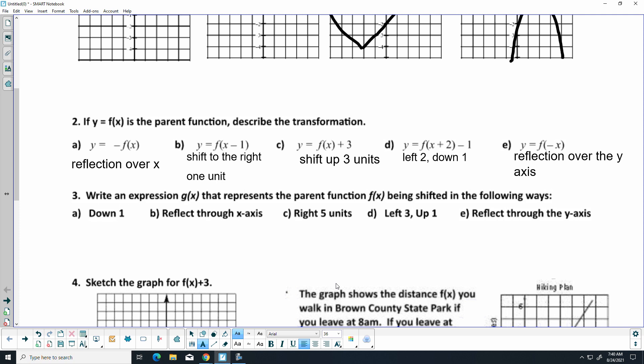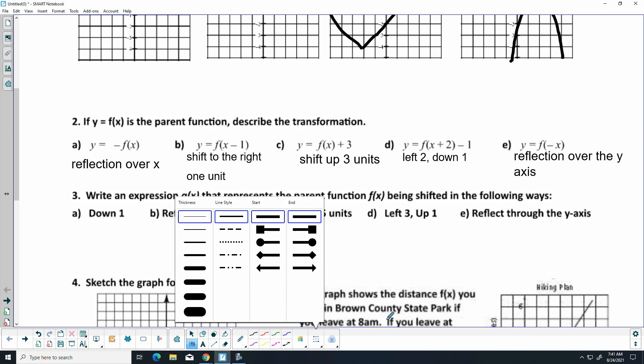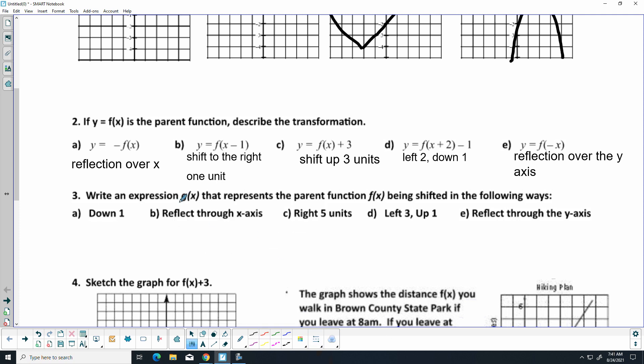All right, so let's go ahead and look at problem number 3. So on that one, we want to write an expression G of X that represents the function F of X shifted in the following ways. Well, down 1, you just take your F function and move it down 1. Reflection through the X axis, you take and make it negative.